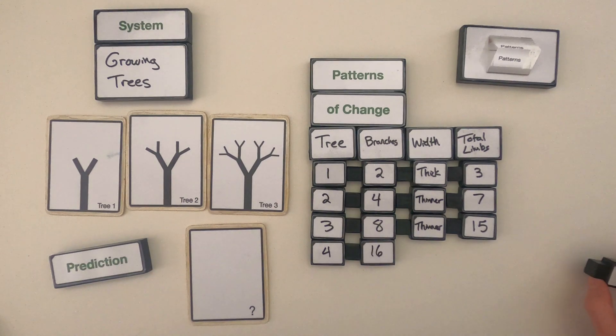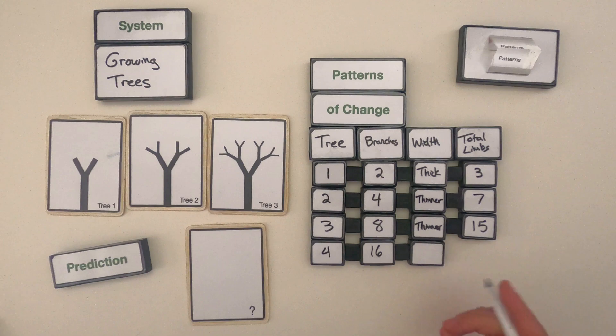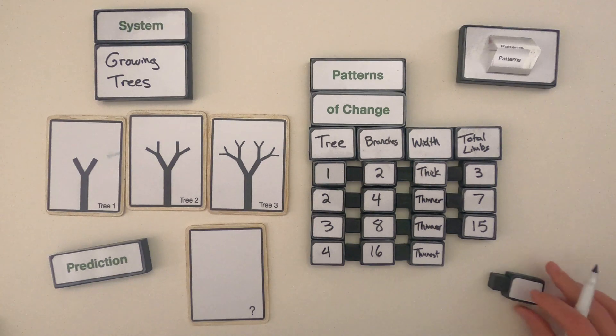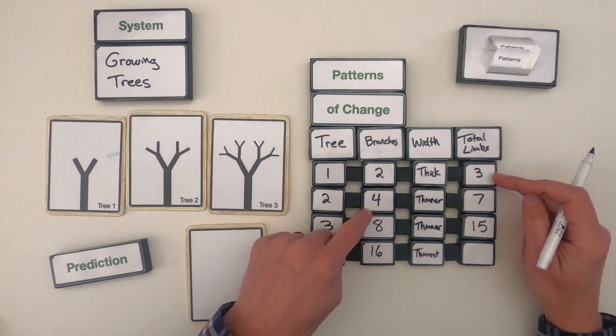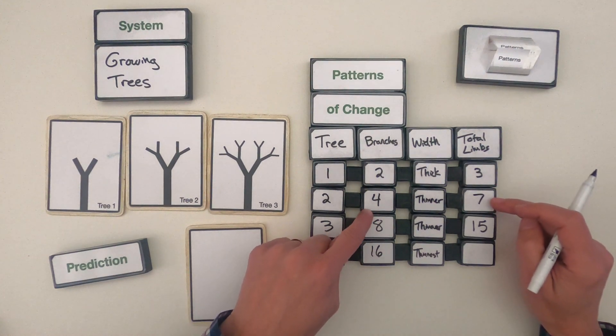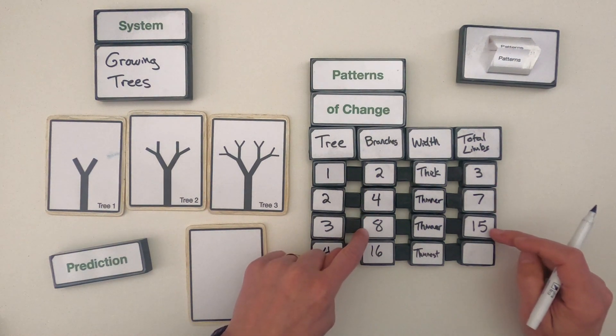If we think about what about the width of those, I think those are going to be the thinnest as we get to the top. And this one might be a little difficult, but if I go through this, three plus the four additional branches gives us seven, plus the additional eight branches gives us 15.